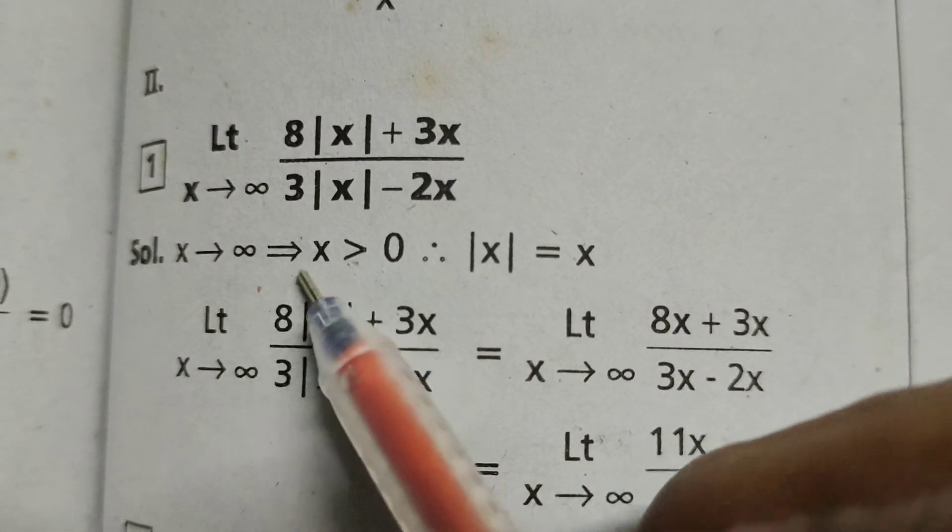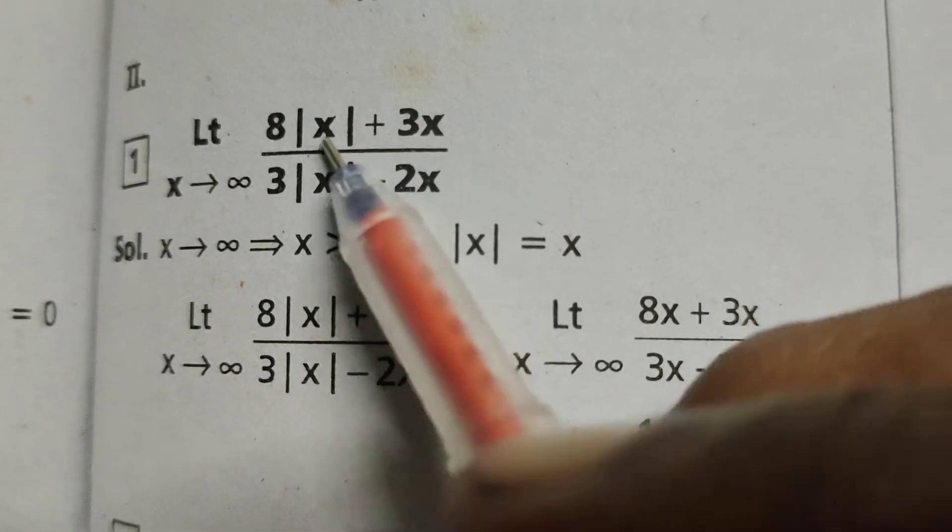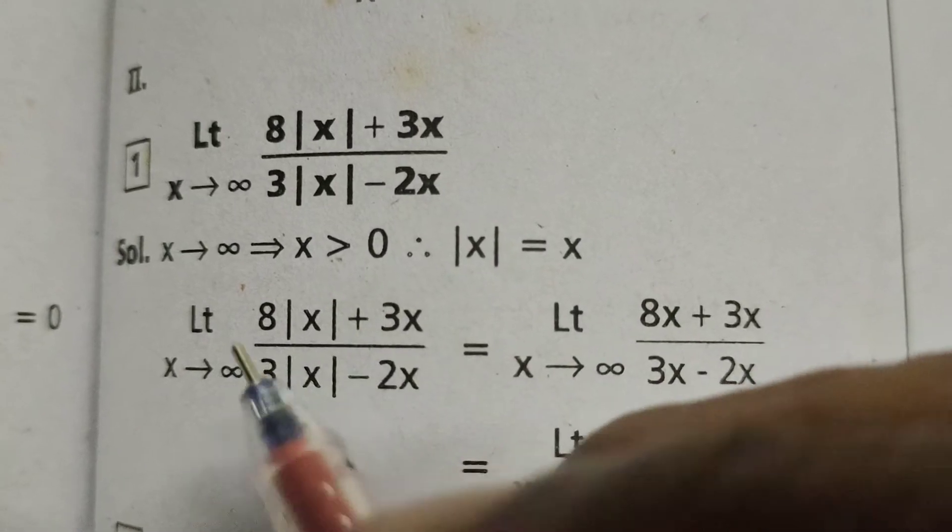Here, x tends to infinity, then x is greater than 0. Therefore, mod x equals to x.